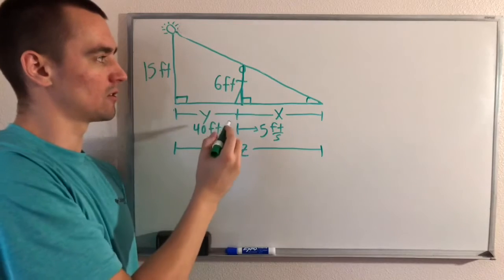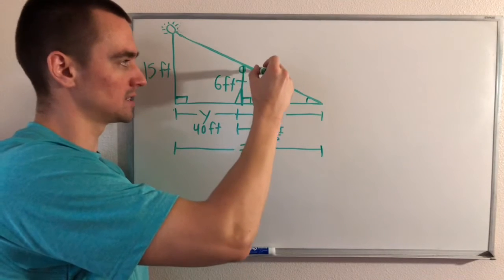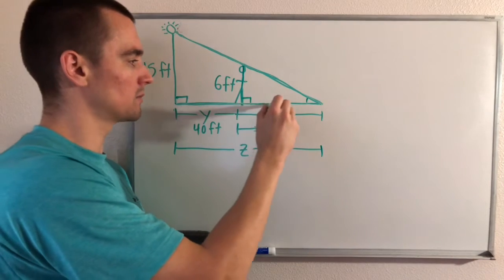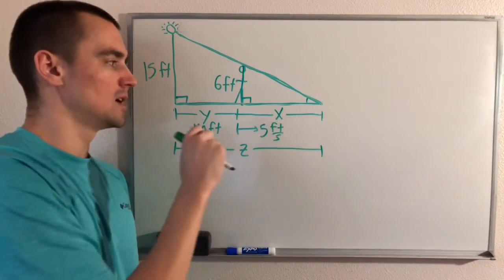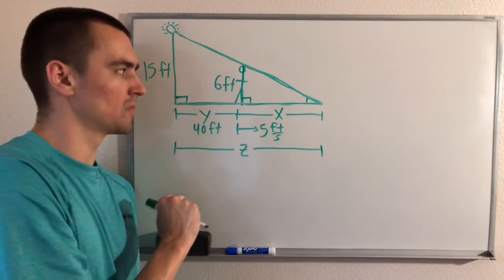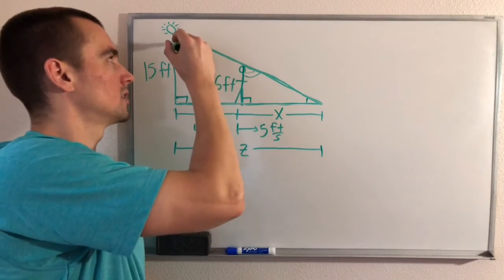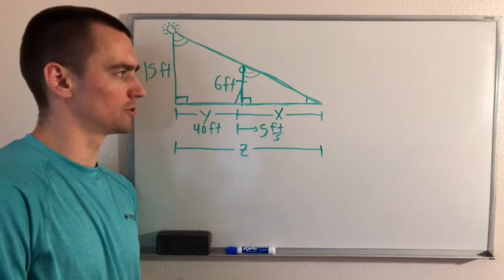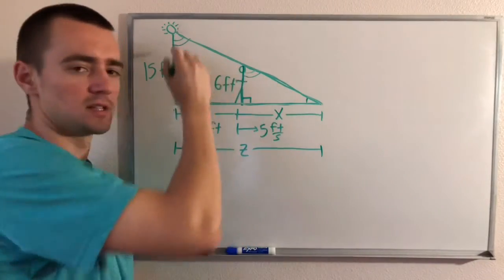This side of the big triangle is on the same line as this side of the little triangle, and similarly the bottom side of the big triangle is on the same line as the bottom of the small triangle. Each side of the small triangle corresponds with a side on the large triangle, and the angles are the same. That tells us the small triangle and the large triangle are similar triangles.